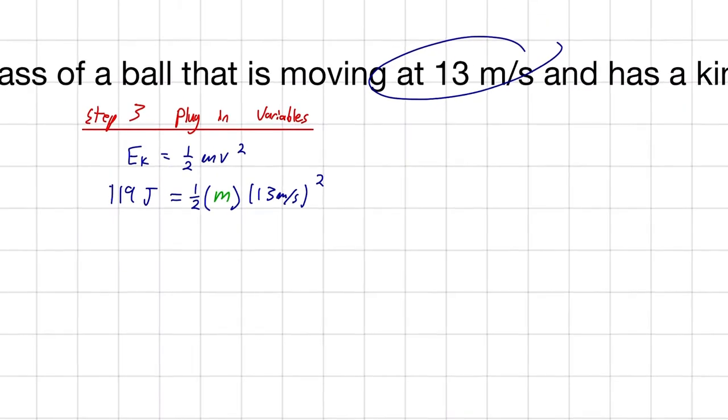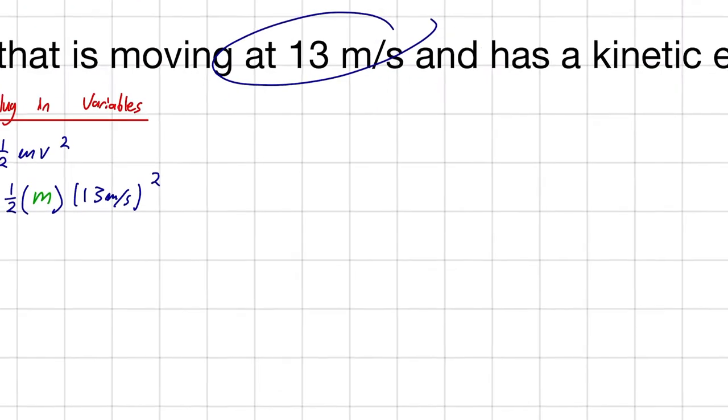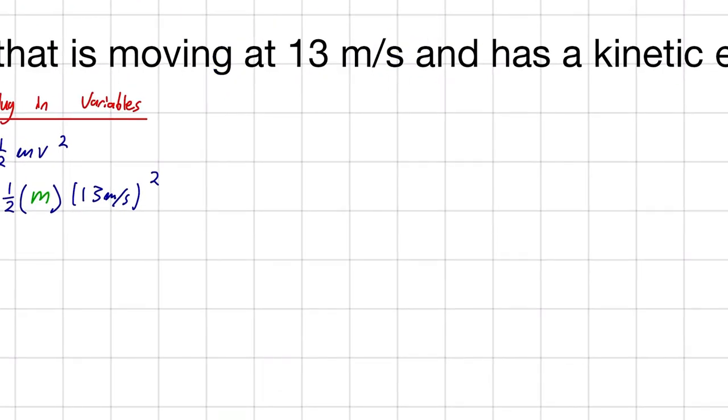All right. So, we've got all our variables plugged in, and we have just one unknown. So, that brings us to the next step. Step four is to isolate our unknown. Isolate unknown.